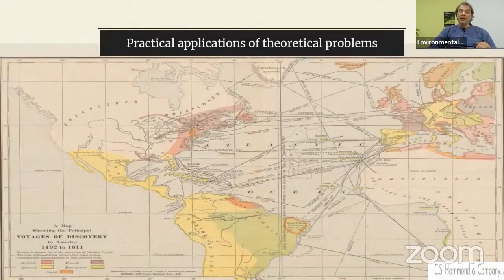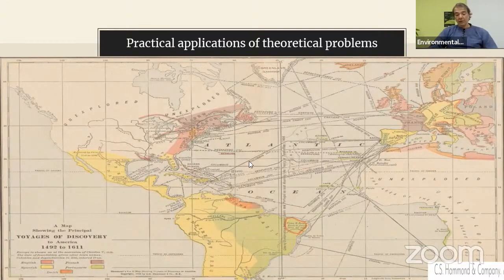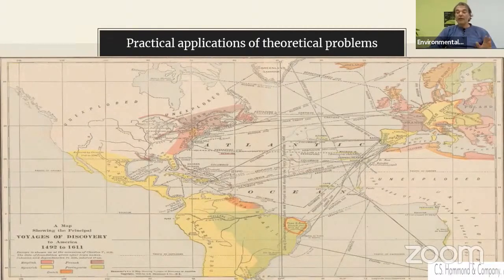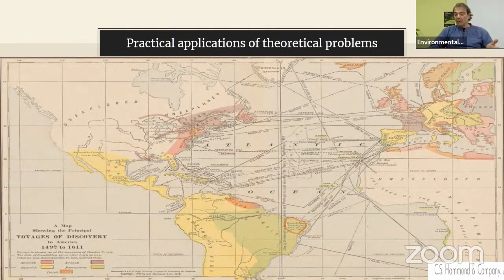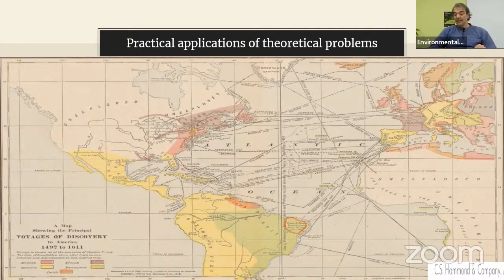These theoretical discussions soon had practical applications, and the first practical applications were after the discovery of America. This is a map of the voyages of discovery to America from 1492 — the first voyage of Columbus — to 1611. The problem that arose was whether indigenous peoples in the Americas would also be entitled to natural rights, or whether these natural rights would be restricted to so-called 'civilized peoples.' Well-known in this debate is the contribution of Bartolomé de las Casas, and his adversary in the famous Valladolid debate, Juan Ginés de Sepúlveda, by the mid-16th century. By that time, philosophy was really evolving, unconstrained from theology, challenging all theories.